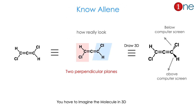Allene is a kind of tricky compound. It attaches with continuous sp2 carbons. Here I give one representative allene with chlorine attached to the allene moiety. How they really look — you should know. They actually have two perpendicular planes to each other: one is the red plane and the blue plane. They are exactly perpendicular to each other. So if you draw it three-dimensionally, one chlorine is above the plane, one hydrogen below the plane, and hydrogen and chlorine are on the plane.